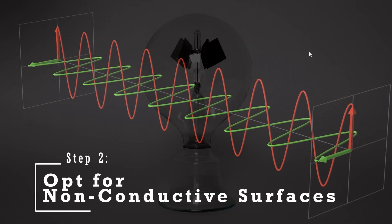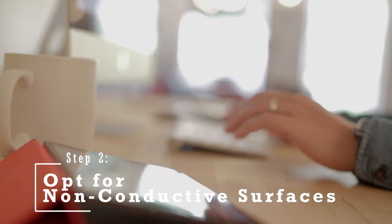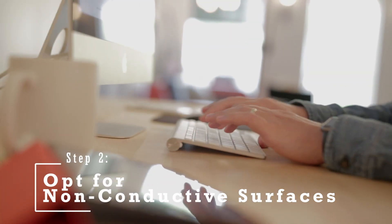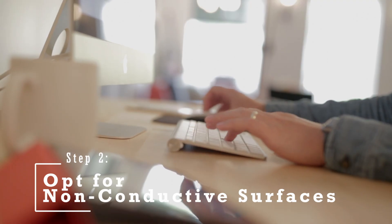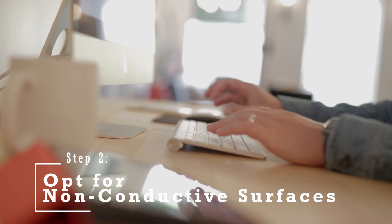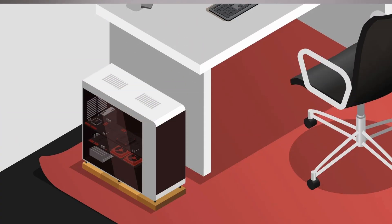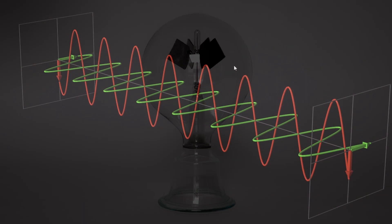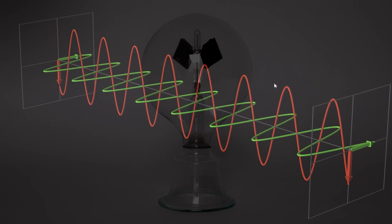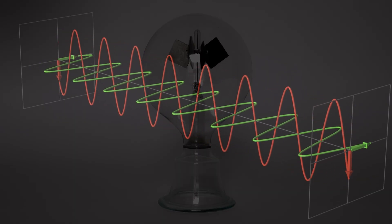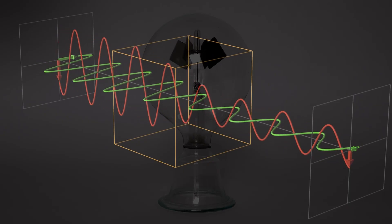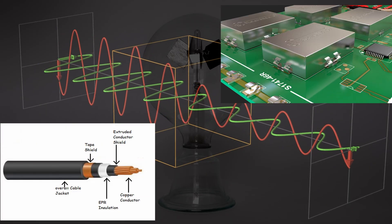Step number two: opting for non-conductive surfaces. Another effective strategy is placing your computer case on a non-conductive surface such as a wooden desk. If your PC is on the ground, elevating it slightly using an appropriate stand can create a necessary distance between your computer and the floor, helping to mitigate potential EMI interference. By following these steps you may successfully reduce or eliminate EMI-related disturbances. Persistent or severe EMI issues may require additional solutions such as EMI shielding or specialized cables.